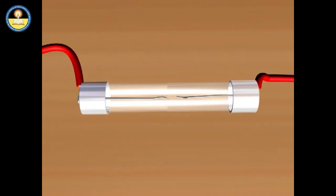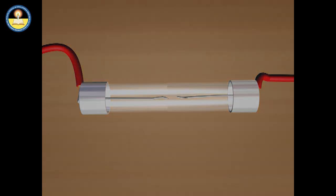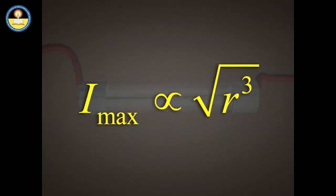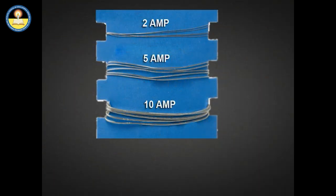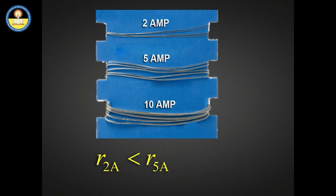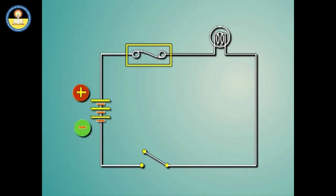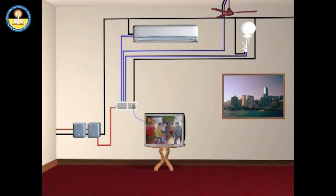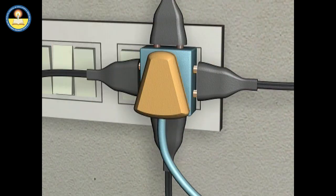As a safety measure, tall buildings are installed with lightning conductors. These are long and thick metal rods whose split upper ends are sharp and pointed, and the lower end is attached to a large metal plate buried deep under the earth. When lightning strikes a building having a lightning conductor, the flow of charges is quickly carried to the lower end of the conductor under the earth and distributed to the immediate surroundings.